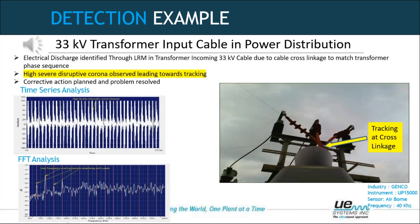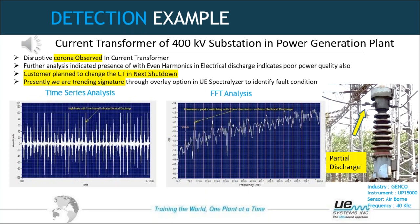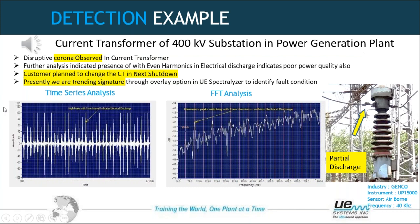Moving to a 33 kV transformer input cable in power distribution — again using the LRM, we found destructive corona moving towards tracking. It was tracking at the cross linkage, which when corrected resolved the sound. We can also detect partial discharge at your CTPTs. At a 400 kV substation in a power generation plant, corona was observed at a current transformer. The customer has planned to change the CT in the next shutdown and is presently trending the FFT analysis signature.